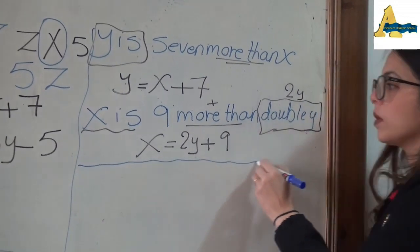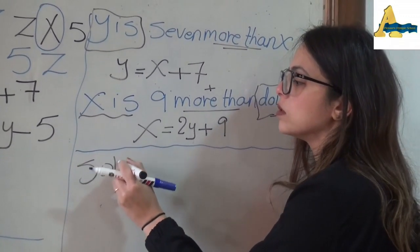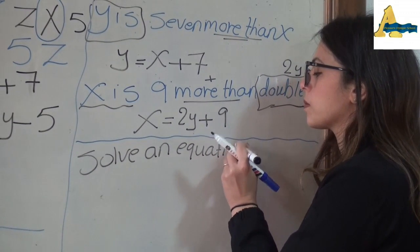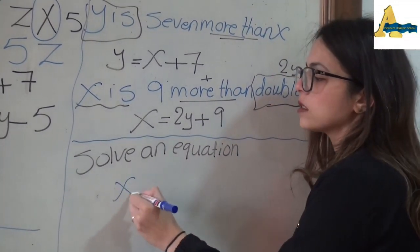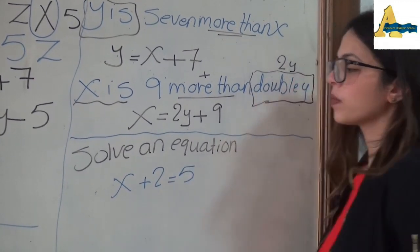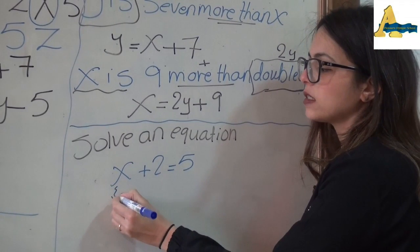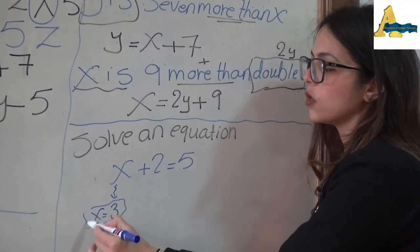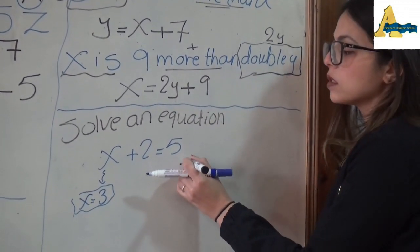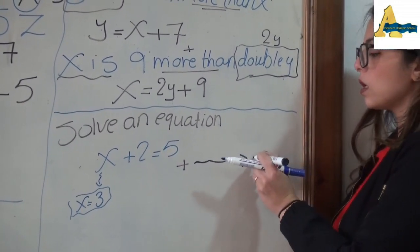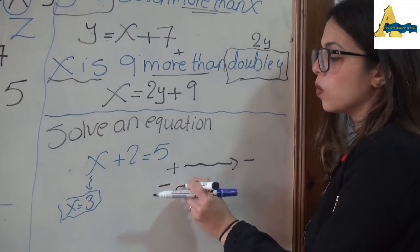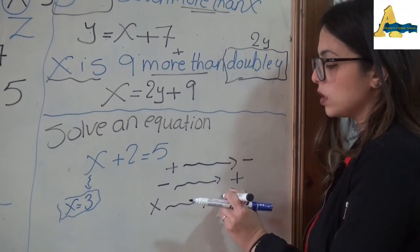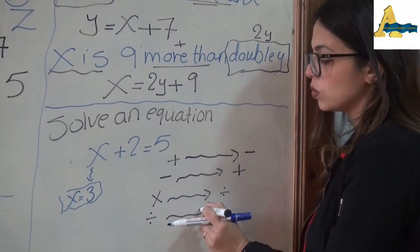The last part today: how to solve an equation. New rules you have to know: the plus will go after the equal sign as minus; the minus will go after the equal sign as plus; times is going to go to divided; and divided is going to go to times.